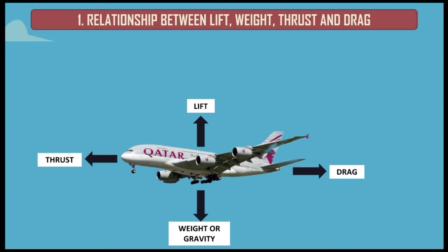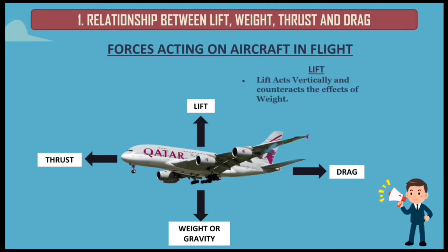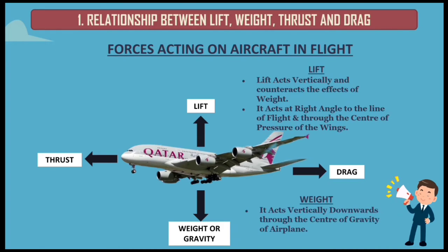First we will go through the relationship between lift, weight, thrust, and drag. Weight has a definite relationship to lift. This relationship is simple but important in understanding the aerodynamics of flying. Lift is the upward force on the wing acting perpendicular to the relative wind. Lift acts vertically and counteracts the effect of weight and gravity. It acts at right angle to the line of flight and through the center of pressure of the wings. Weight and gravity force acts downwards through the center of gravity of the airplane.